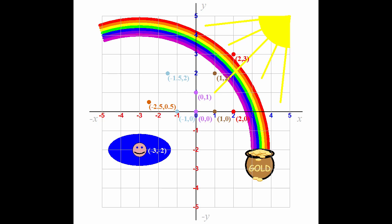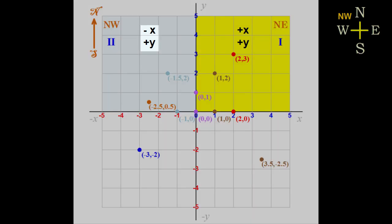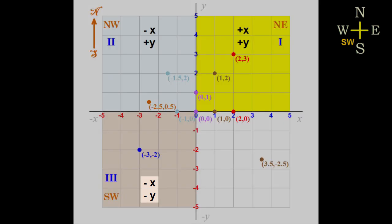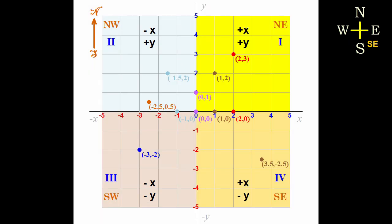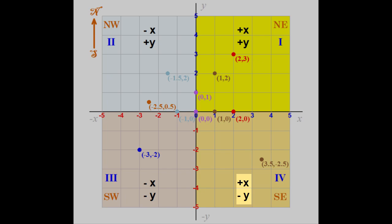The X-Y coordinate system can be divided into 4 quadrants. The first quadrant is northeast of the origin, where X and Y are both positive. In the second quadrant, northwest of the origin, X is negative and Y is positive. In the third quadrant, southwest of the origin, X and Y are both negative. In the fourth quadrant, southeast of the origin, X is positive and Y is negative.